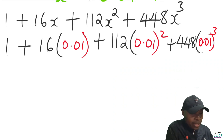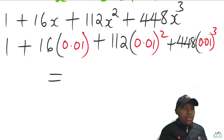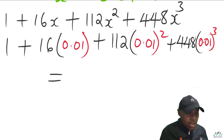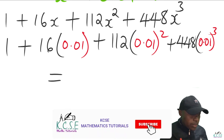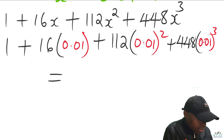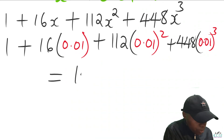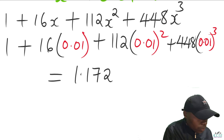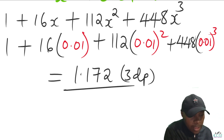At this level you can use a calculator to work out the answer. Using the calculator: 1 plus 16 times 0.01, adding all terms through, you obtain the answer 1.172. Of course, this is to three decimal places.